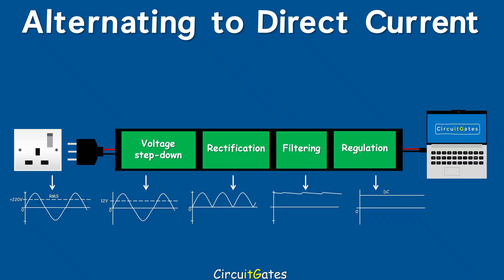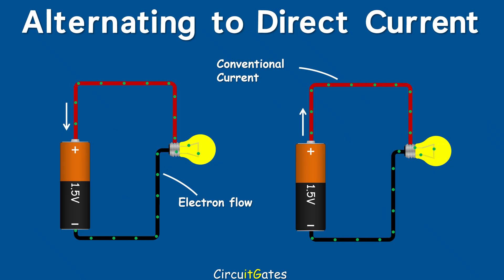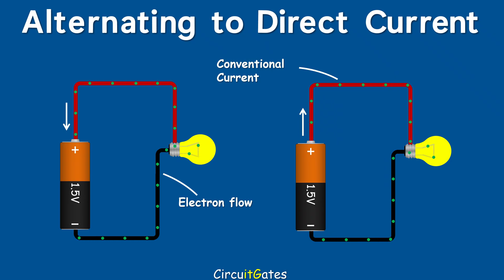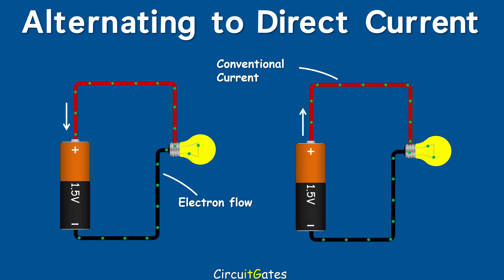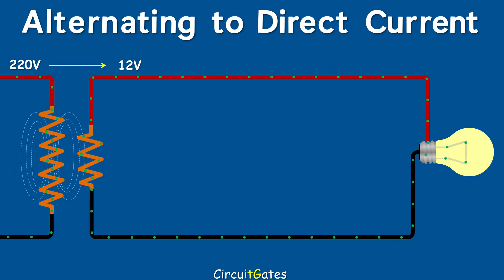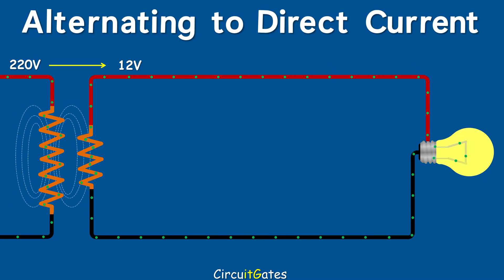In order to understand this conversion, we are going to use conventional current that flows from positive to negative. Let us start by stepping down 220 volts to 12 volts using a step-down transformer. When stepping down the voltage, you are increasing the current. This increased current is the maximum current that can be produced by the secondary side of the transformer.